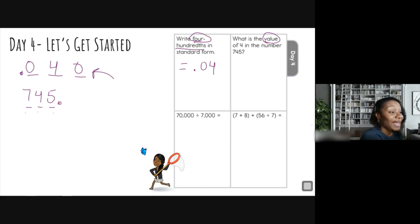But it's asking for the value of the four. So because the four is in the what place? The tens place. The value is 40, right? Or four tens. You can say either or, okay? But you need to know the value.